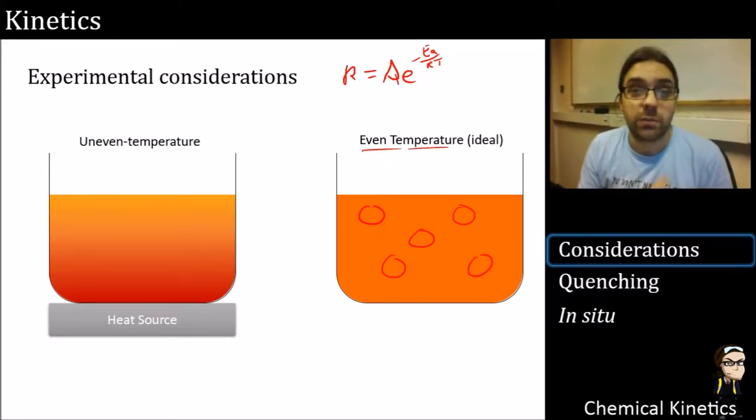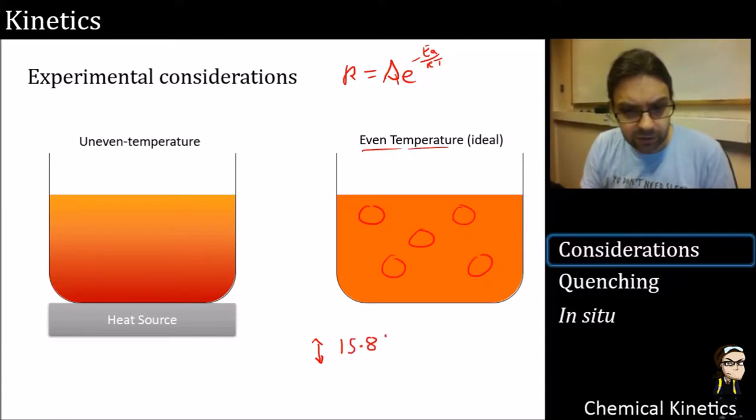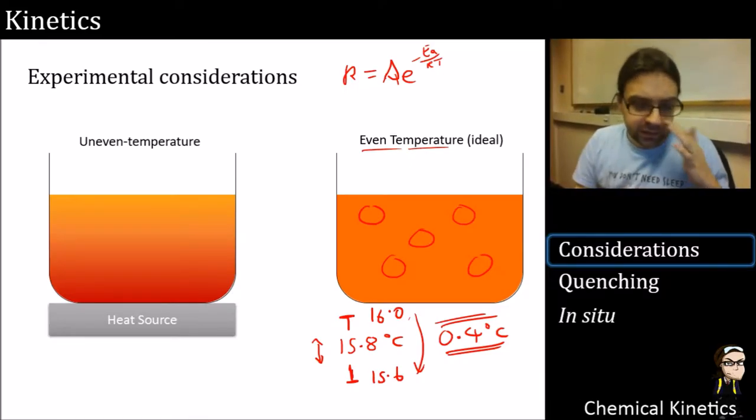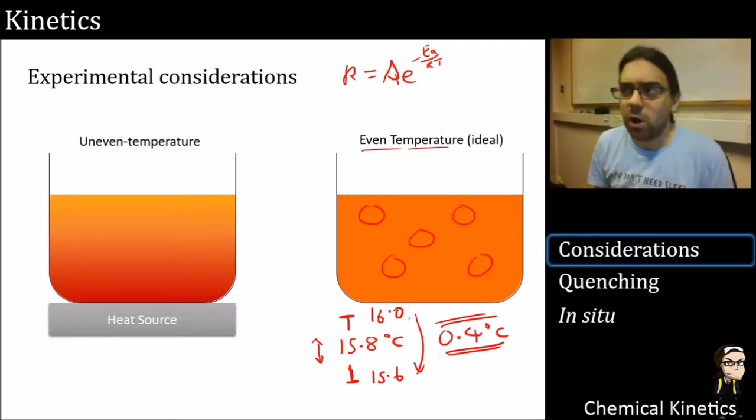So what we need to do is make sure that the temperature is stable throughout and even. The temperature should also be as stable as possible in time as well. You can expect some kind of error in measurement here. You might think that this is maybe 15.8 degrees C. Well, actually, it's probably fluctuating between maybe 16 and 15.6. That is a 0.4 degree difference here. Maybe that's acceptable for what you're doing as an experiment. Maybe it's a bit too much. So you have to balance out how hard is it to get the temperature even versus how much accuracy you want.